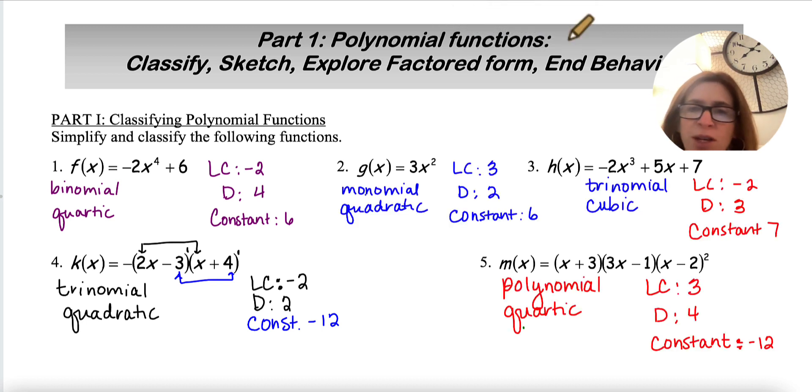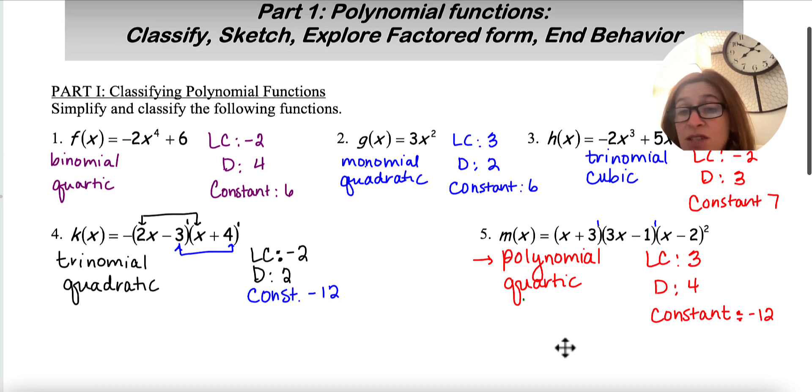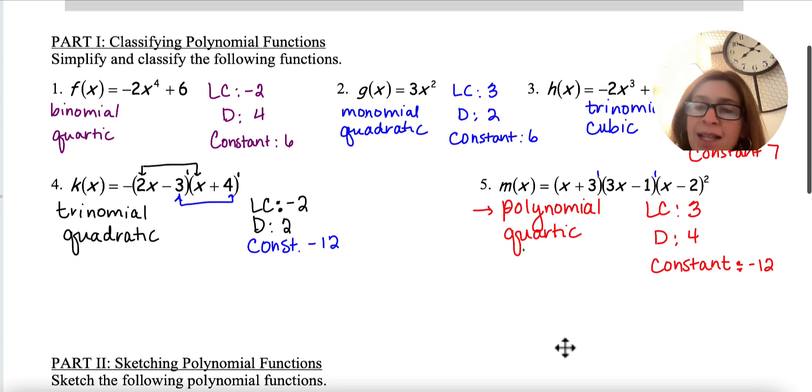All right, so you're back. You've tried these. Hopefully you came up with the same answers for two and three. Five might have given you a little trouble. So first of all, once we get past a trinomial, we're going to call them all polynomials. This would be a quartic because if I have a degree one here and a degree one here and a degree two here, that's going to add up to four. So my degree is four, so it would be a quartic polynomial. The constant is probably maybe have thrown you. You have to remember that there were two factors of x minus two here. So this is really x minus two and x minus two. So I'm going to multiply all of the constant terms if I were to multiply that out. So it would be three times negative one times negative two times negative two, which would give me a negative 12.